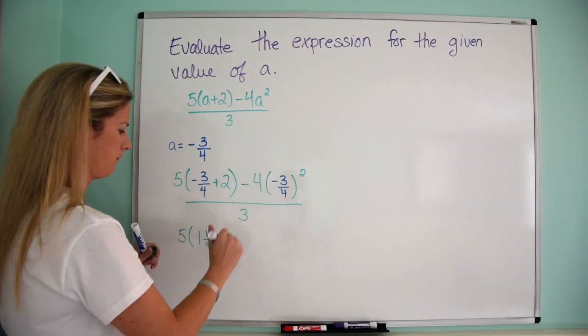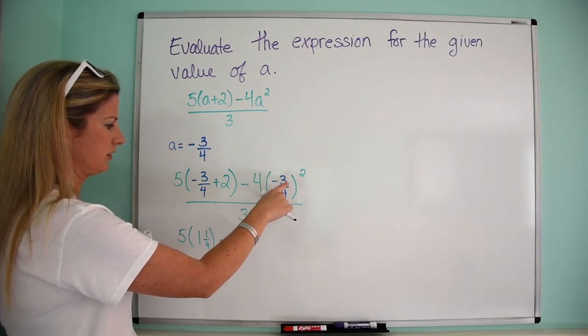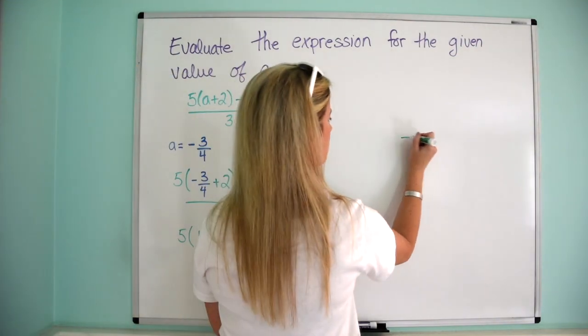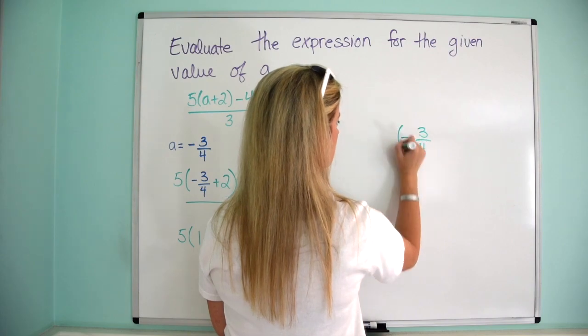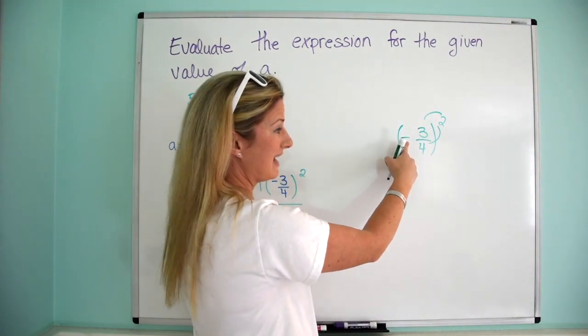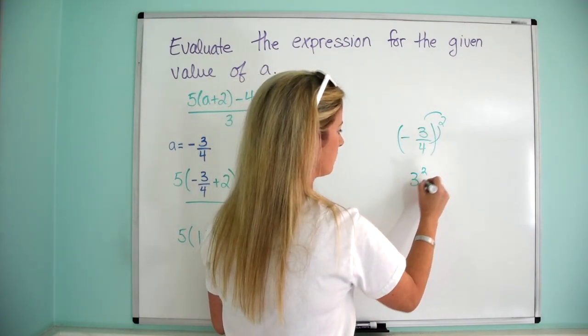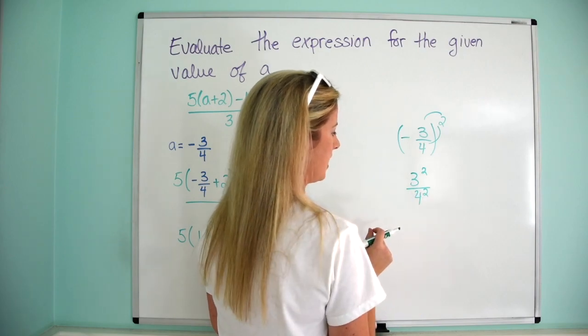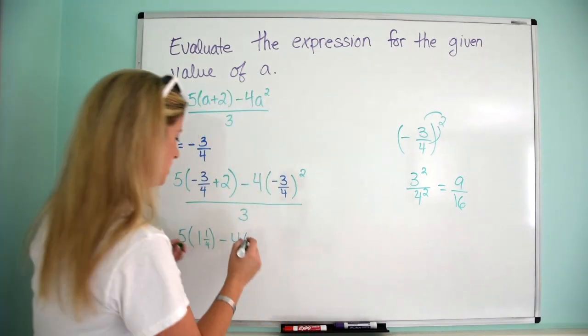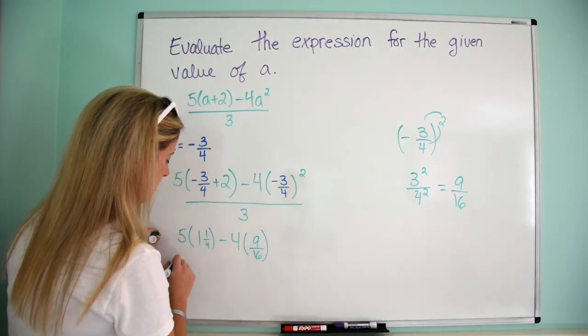and then 4 times negative 3 fourths squared. So remember, we distribute the squared to both parts. Now, because it's negative, that means it's automatically going to go to positive, so don't even worry about the sign anymore. So it's going to be 3 squared over 4 squared, and then that's just going to be 9 over 16, and then over 3.